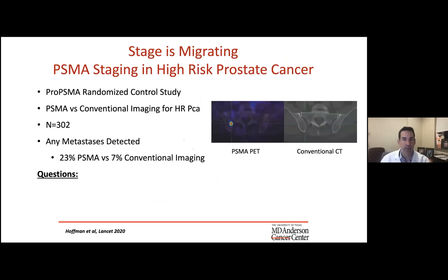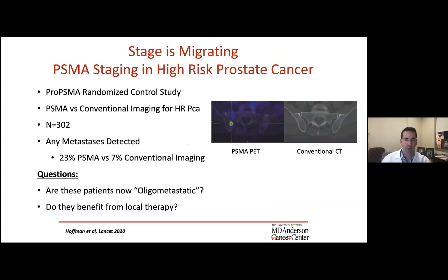The proPSMA study from Australia looked at PSMA versus conventional imaging for high-risk prostate cancer in non-known metastatic patients. In 300 patients, any metastasis detected was 23% with PSMA versus 7% with conventional imaging. This raises questions: are these patients oligometastatic? Do we need new terminology for PET-identified lesions? Do all these lesions actually represent disease? And do we continue with planned local therapy, or abort that and go to systemic treatment now because of these new findings?